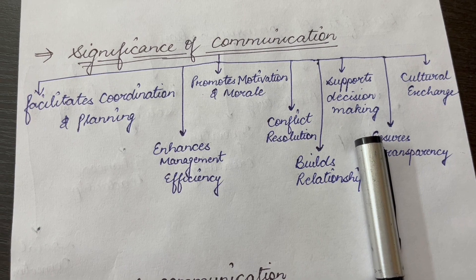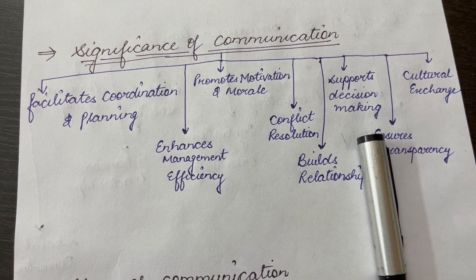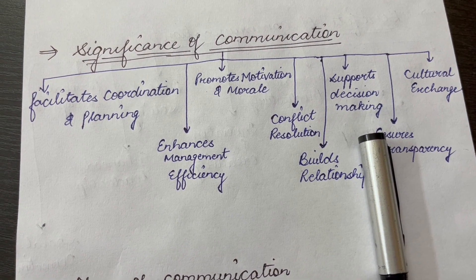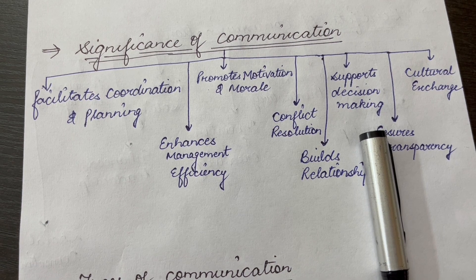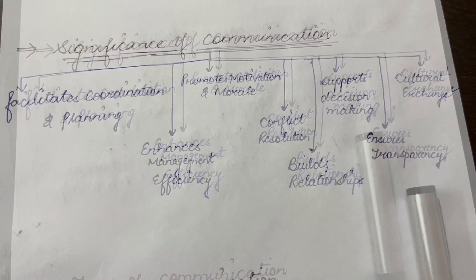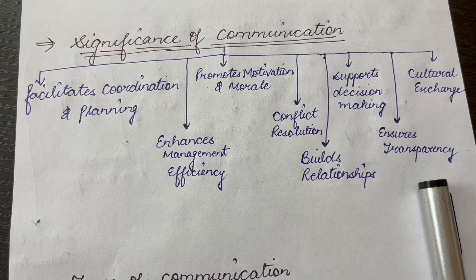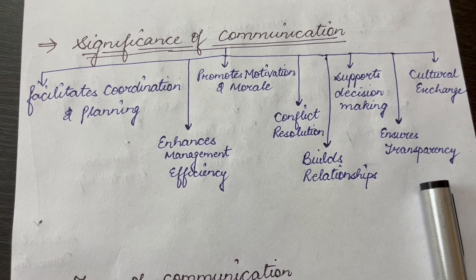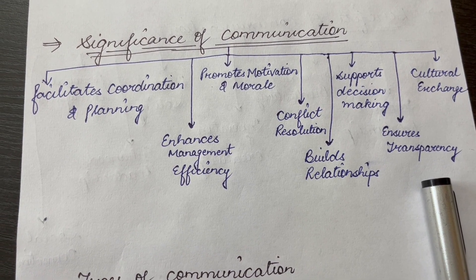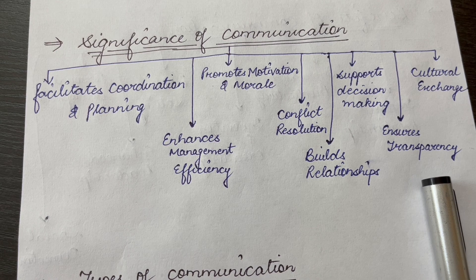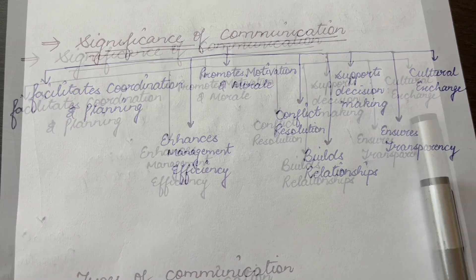Next is supports decision making. The availability of complete and accurate information enables better decision making at all levels of an organization. This ensures transparency. Regular and clear communication within an organization promotes transparency and makes the organizational processes more democratic.